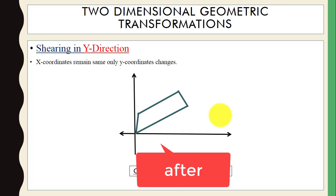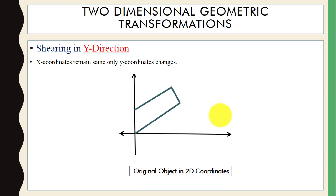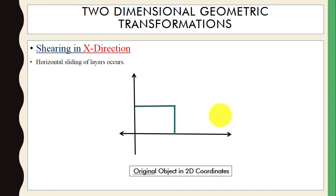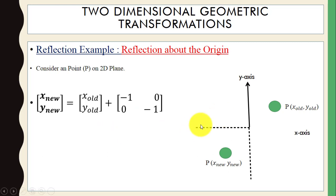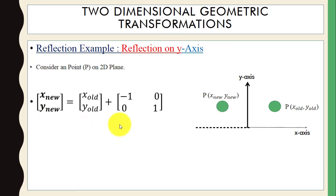In the next video we will learn translation, scaling, rotation, reflection, and shearing using numerical examples — how these matrices work, how we add coordinate values, and how we calculate the position of objects. To summarize: reflection is the mirror image of an object, and shearing means changing the shape of an object. If you have any questions, comment below. Thanks for watching.